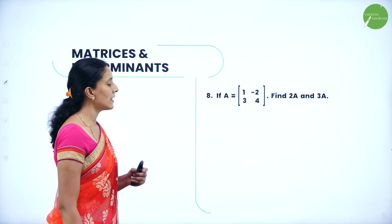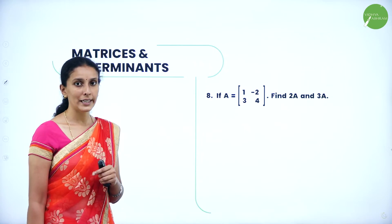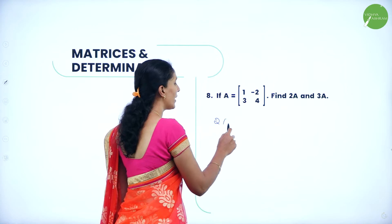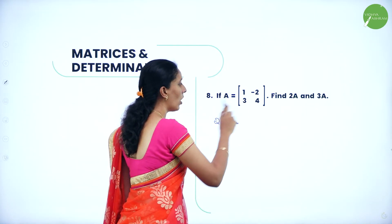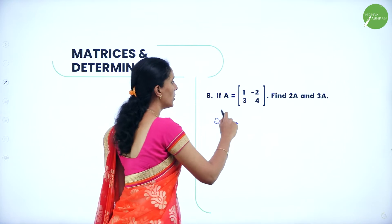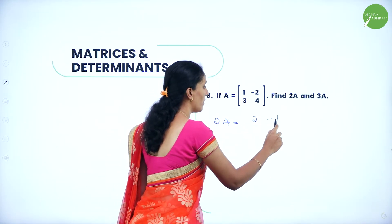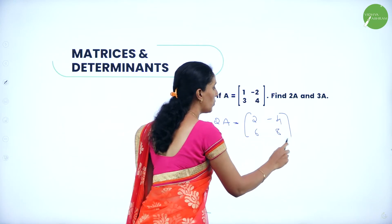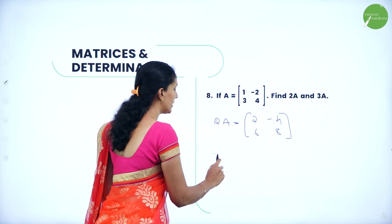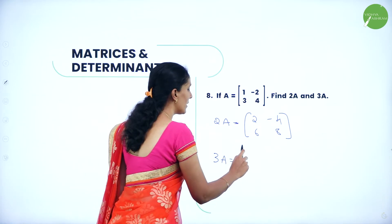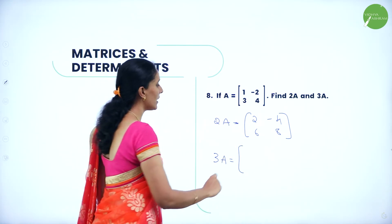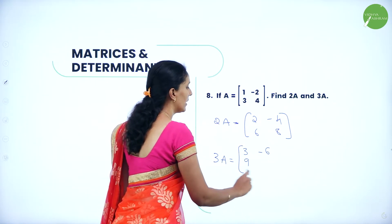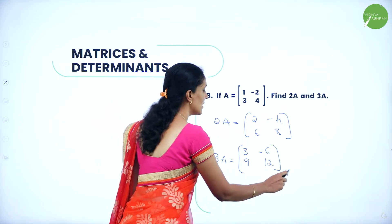Next question: if A = [1, -2; 3, 4], find 2A and 3A. For 2A, multiply 2 to all elements: [2, -4; 6, 8]. For 3A, multiply 3 to all elements: [3, -6; 9, 12].